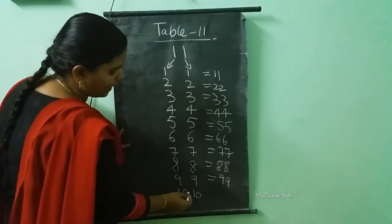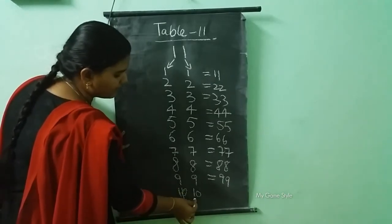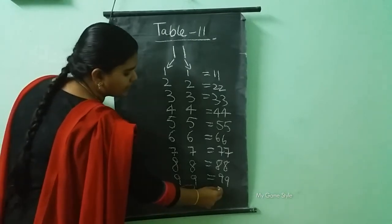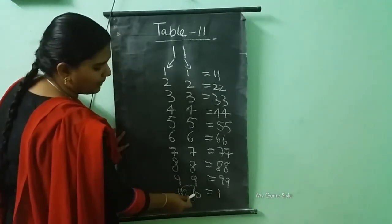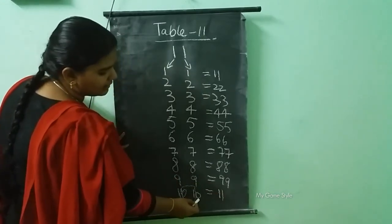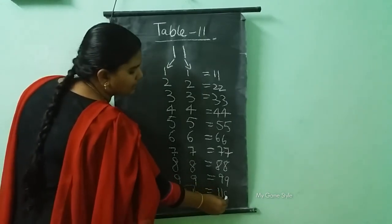Here we need to add these two numbers. This one we need to write same. And here 0 plus 1 how much? 1. And then here it is 0. So we need to write same 0 here.